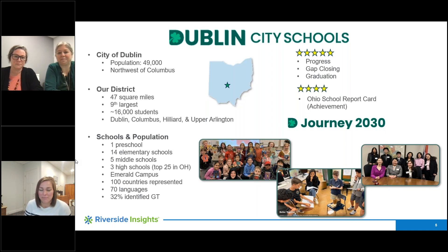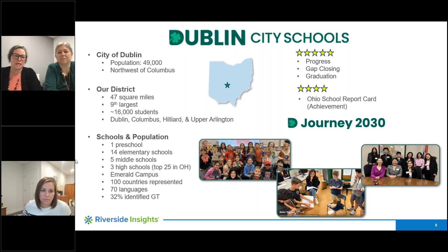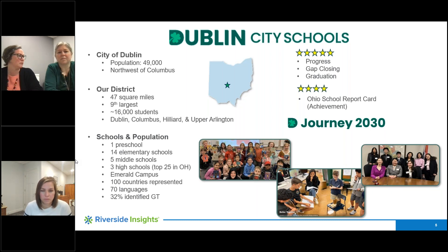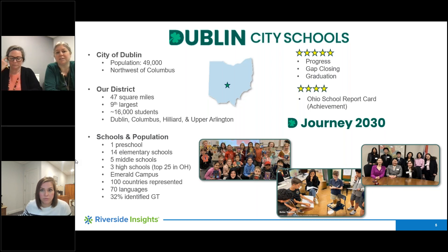Dublin City Schools is just north of the city of Columbus and we are a rapidly growing school district at approximately 17,000 students and growing by a few hundred each year. About 32 percent of our students have at least one gifted identification, and we have about a 12 percent EL-identified population but a much larger multilingual population across our diverse community.